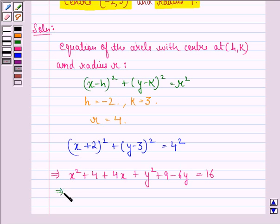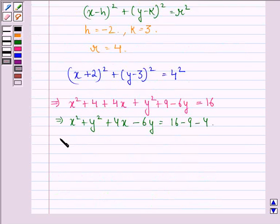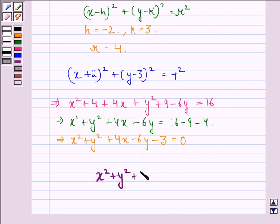This implies that x² + y² + 4x - 6y is equal to 16 - 9 - 4. Now we see that 16 - 9 - 4 is +3. When it comes on the left hand side it becomes -3 = 0. So we can say that our answer to the question is that equation of the circle with center (-2, 3) and radius 4 is given by x² + y² + 4x - 6y - 3 = 0.